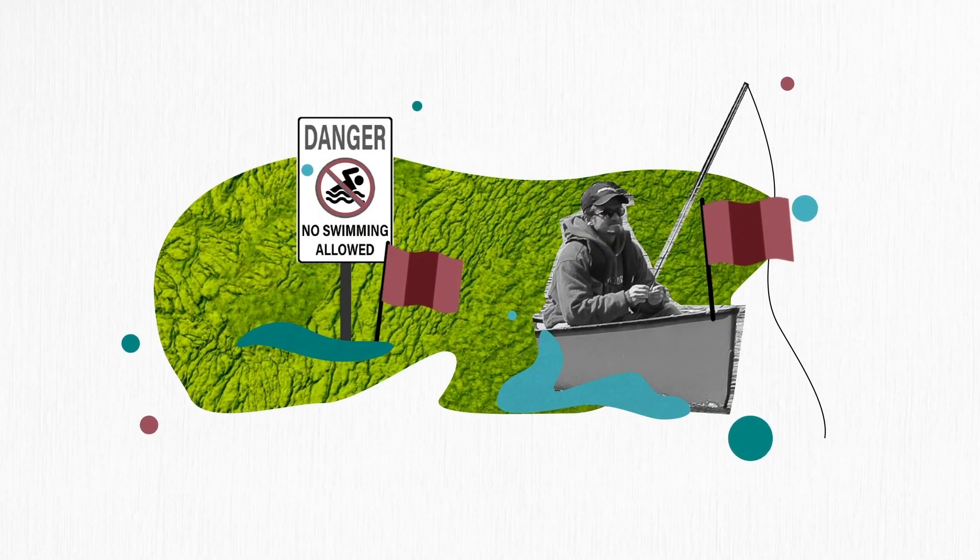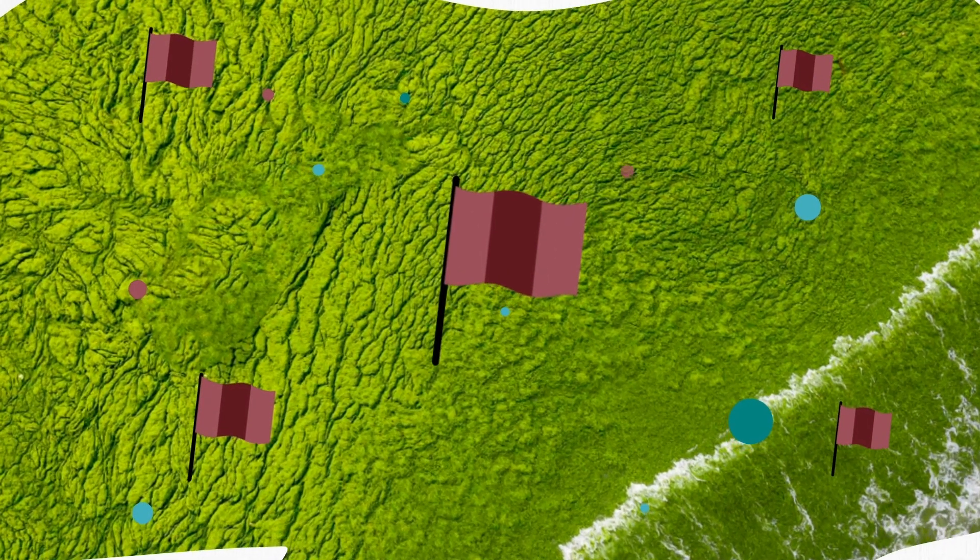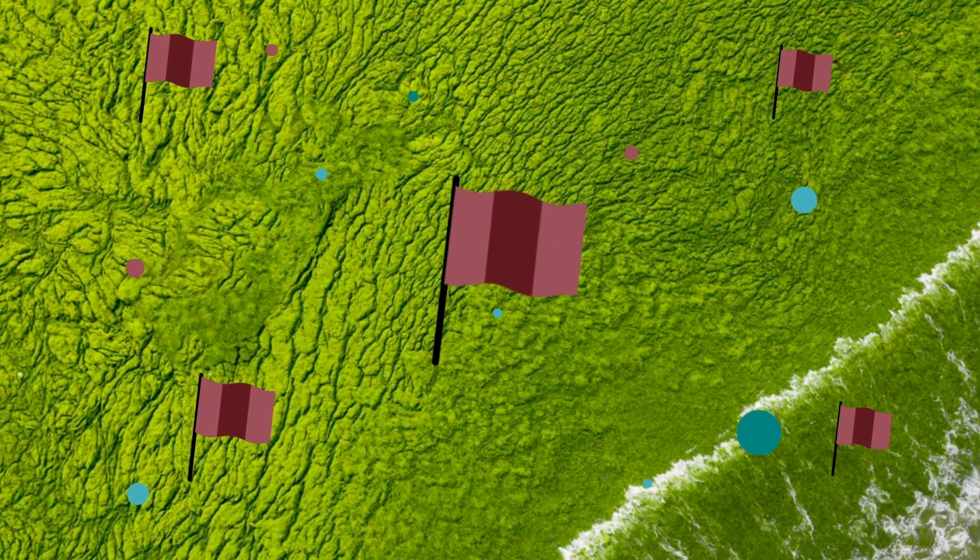Climate change further aggravates the problem by increasing the likelihood and severity of algal blooms given increased rain events and warmer temperatures.